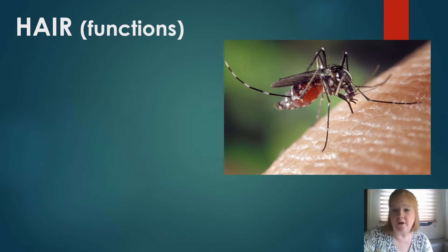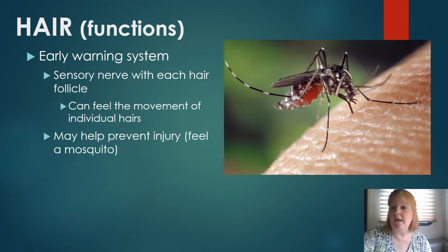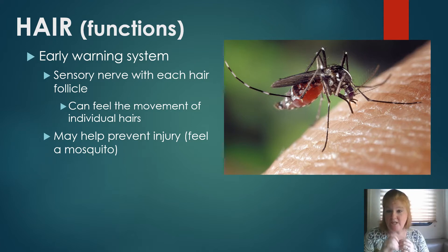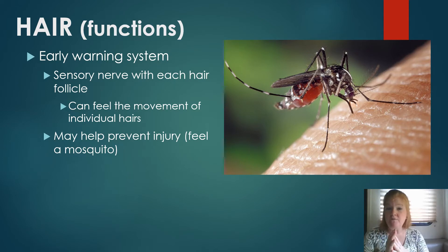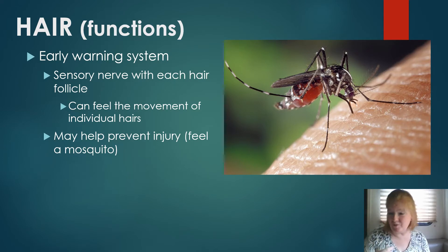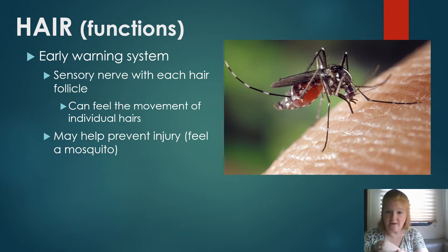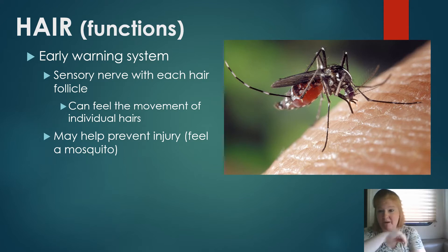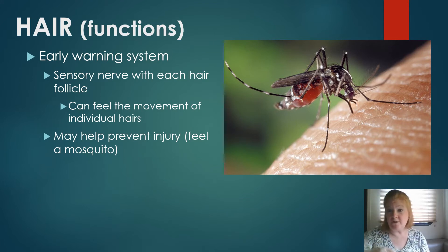Hair functions as an early warning system. There's a sensory nerve linked to each and every hair follicle, so we can feel the movement of individual hairs, which may help prevent injury. For example, you can feel a mosquito that rustles the hair. It's also the reason why a loose hair touching your skin can drive you a little bit wild until you find it.